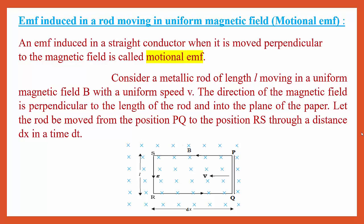First, what is motional EMF? An EMF is induced in a straight conductor when it is moved perpendicular to the magnetic field. When a conductor is moving perpendicular to the magnetic field, induced EMF takes place in the conductor — and we call it motional EMF. Only because of the movement of the conductor in the magnetic field does induced EMF take place. This derivation carries three marks in your board examination.